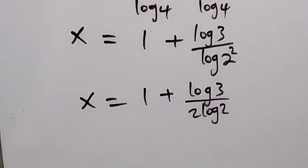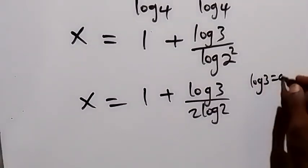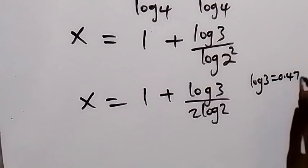Then here we can substitute the value of log 3 and log 2. So log 3 is equal to 0.4771.